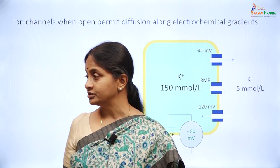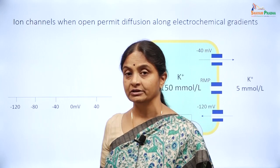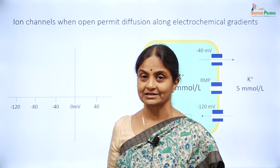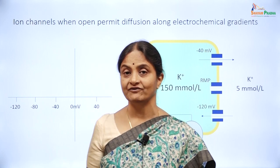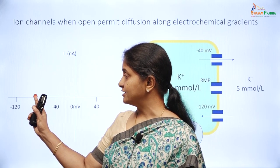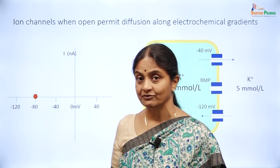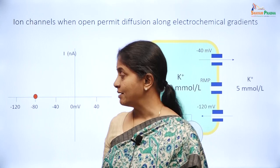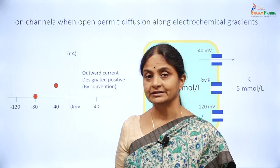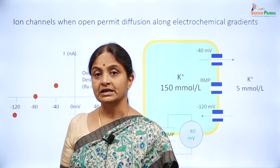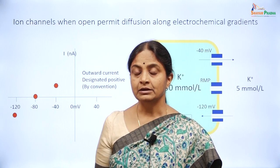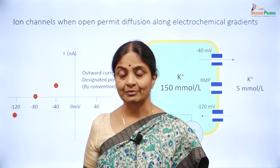If we depict this in an IV curve — where membrane voltage is on the x-axis and current on the y-axis — the point at minus 80 millivolts represents no potassium current. If the membrane becomes more positive, say from minus 80 to minus 40 millivolts, there is an outward current, designated as positive by convention. If the membrane becomes more negative, there is an inward current through potassium channels — also simple diffusion.